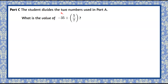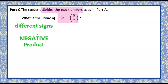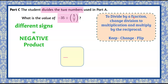Welcome back. So we're going to determine the value of negative 35 divided by the fraction five-sevenths. Division has the same sign rules as multiplying. I have two different signs, so different signs equals a negative product. We'll set up our answer space with a negative sign, and now we can ignore the signs. To divide by a fraction, we change division to multiplication and multiply by the reciprocal — you may have heard the catchphrase: keep, change, flip.